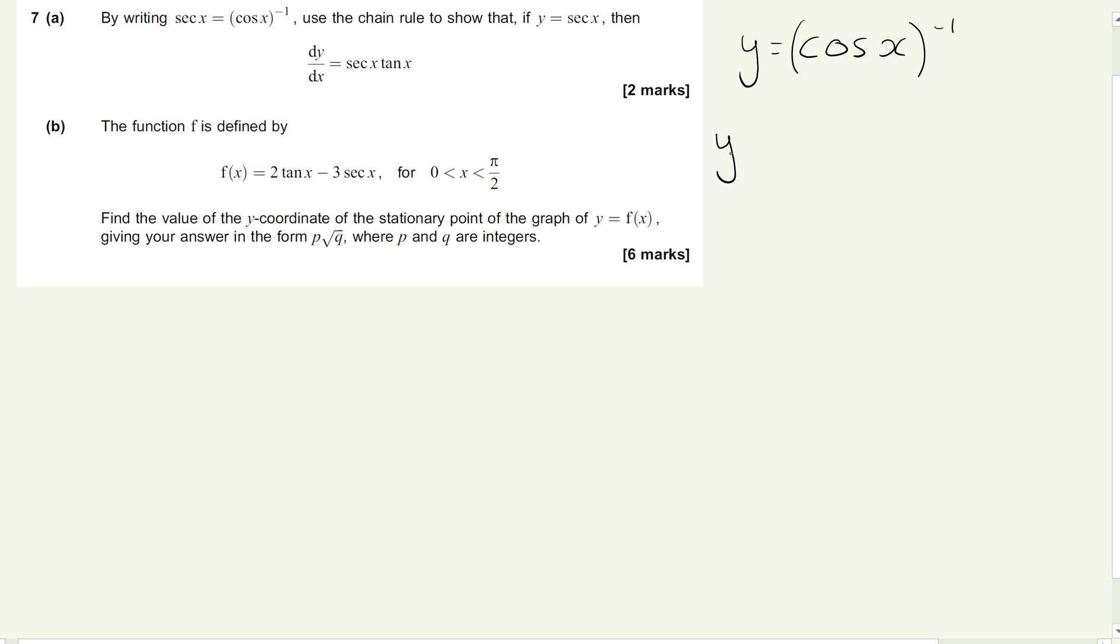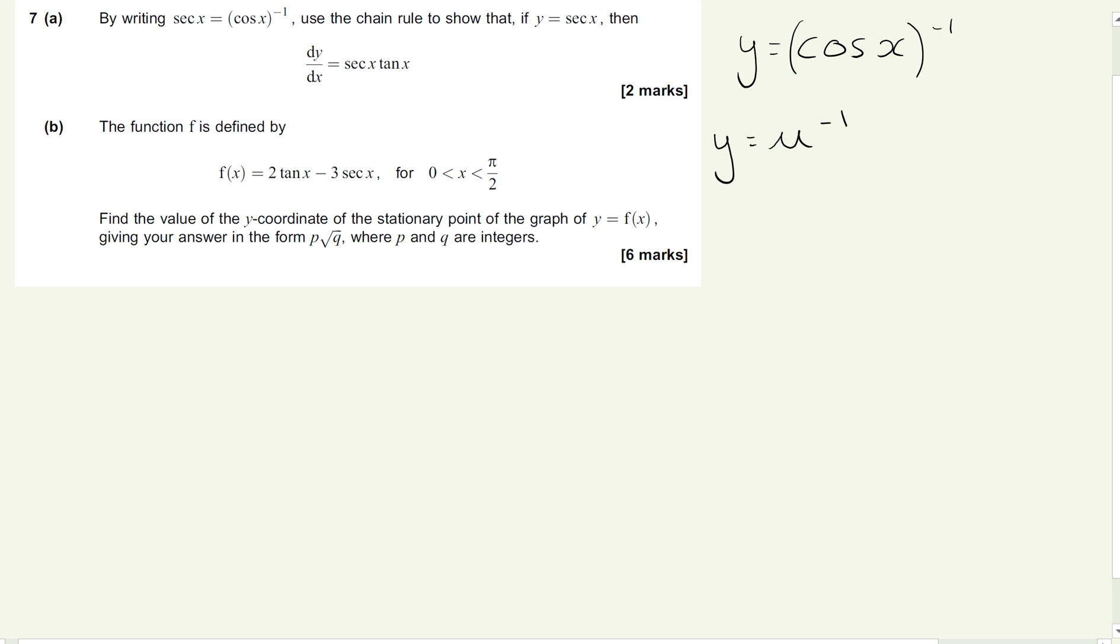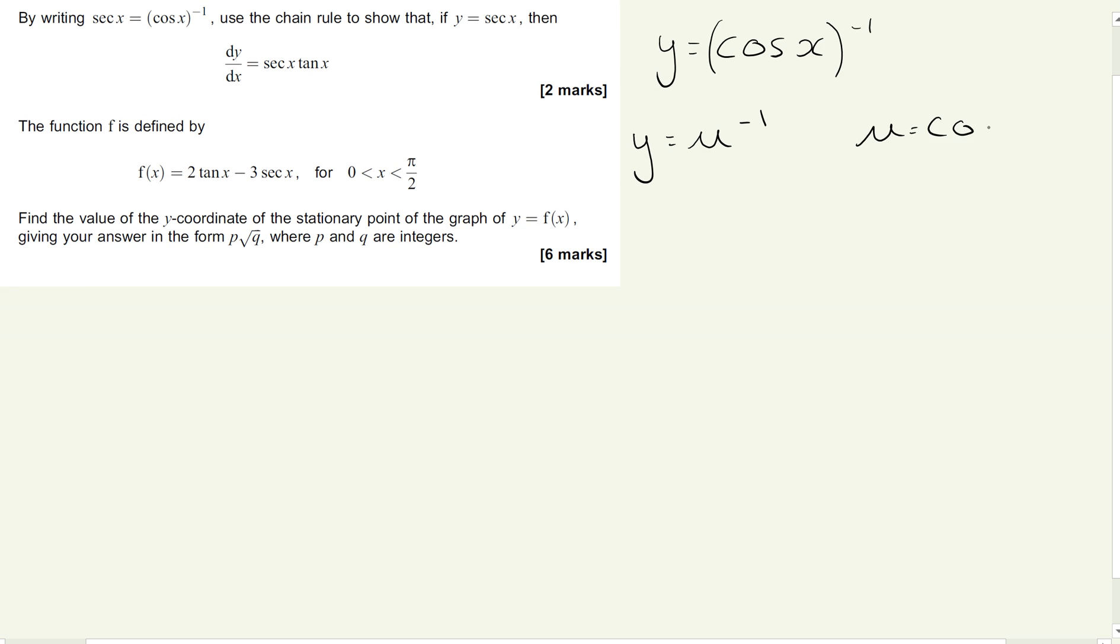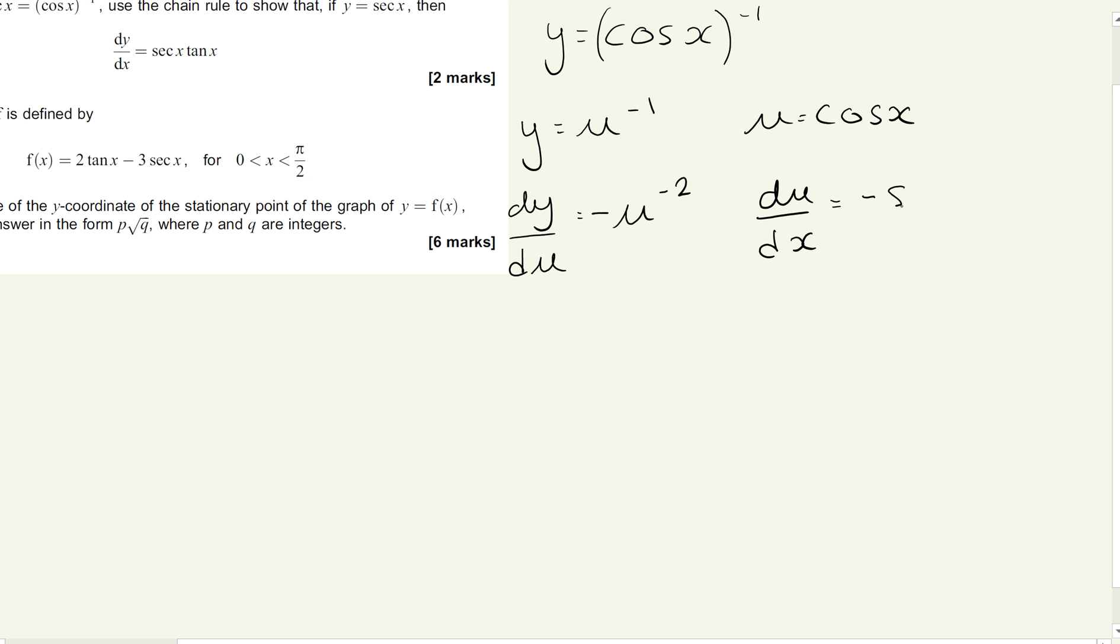So we're going to use our chain rule. So y equals u to the minus 1, and u is going to equal to cos x. So then we're going to find dy by du, and we're going to find du by dx. So to find dy by du, bring down the power, take one off the power. So bring down the minus 1, so we're going to get minus u take one off the power to the minus 2. And cos x will differentiate to minus sin x. So chain rule then says that we're going to do dy by du times by du by dx, because that gives us dy by dx.